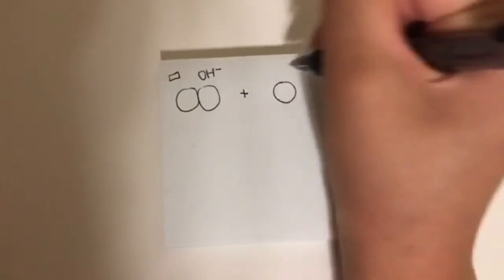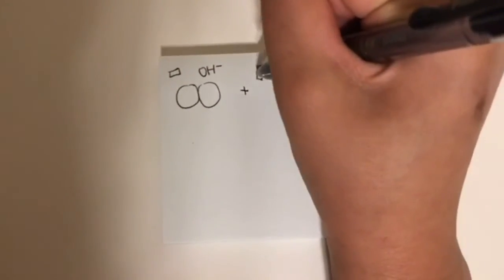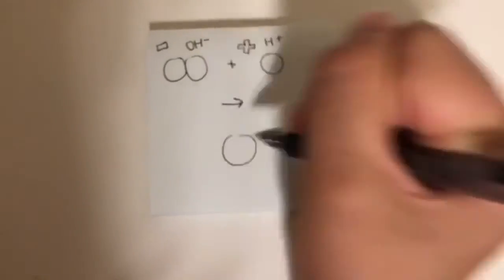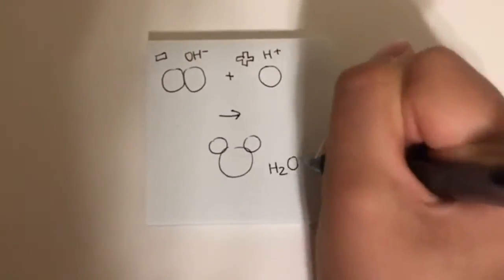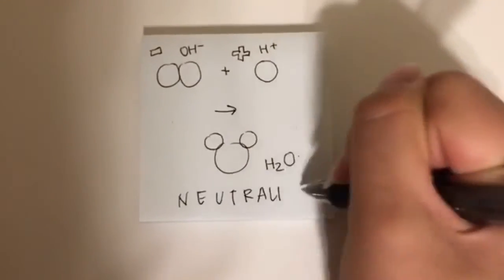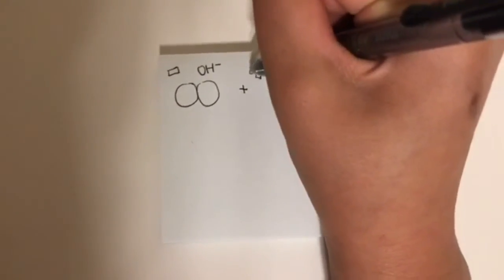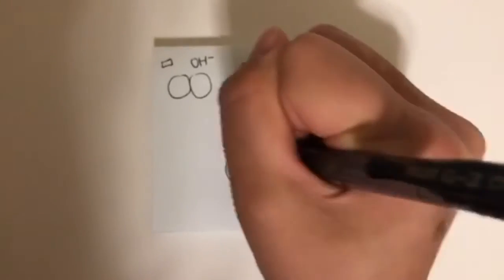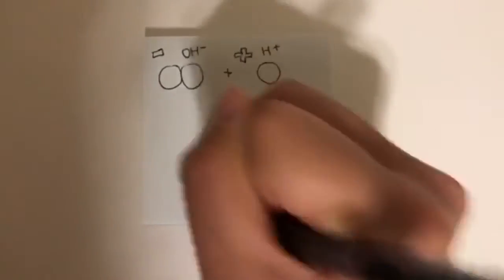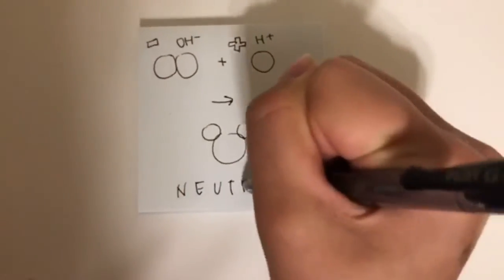Acids and bases will neutralize each other. Electrons will be shared between one another. H2O is amphoteric, it's a pH story. When they neutralize, acids and bases will neutralize each other. Electrons will be shared between one another. H2O is amphoteric, it's a pH story. When they neutralize.